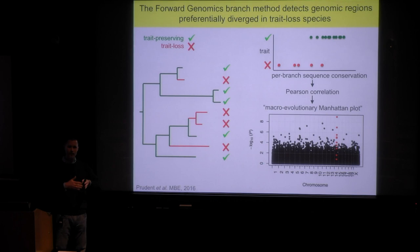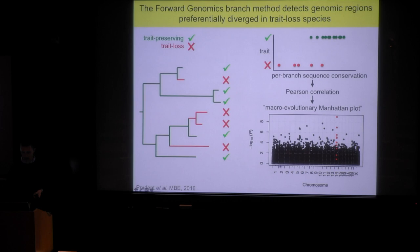We can then march over the entire genome, look at thousands of conserved regions, and produce what I call a macroevolutionary Manhattan plot — very fitting in this city — which shows the position of each region along all chromosomes on the x-axis, and the minus log p-values on the y-axis.